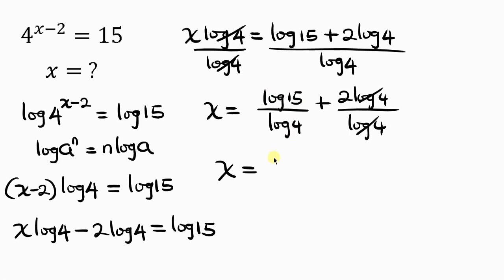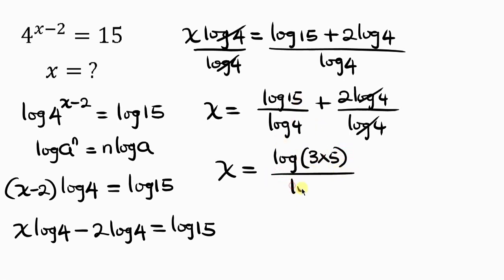Log 15 can be written as log(3 × 5), because 3 times 5 is 15, all over log 4, plus 2.